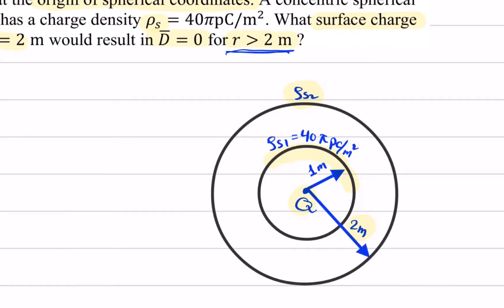We need to use Gauss's Law, specifically focusing on the region where D equals zero for r greater than two meters. We'll focus our solution on the region where r is greater than two meters.